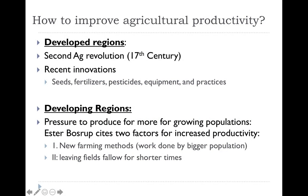When we talk about how to improve agricultural productivity, in the developed regions of the world we reference the second agricultural revolution. This is where we see a lot of brand new innovations — things like specialized seeds, fertilizers and pesticides, new equipment, and new types of practices. This happens right around the same time as the industrial revolution, allowing experimentation with new ways of creating food and crops, around the 17th century.